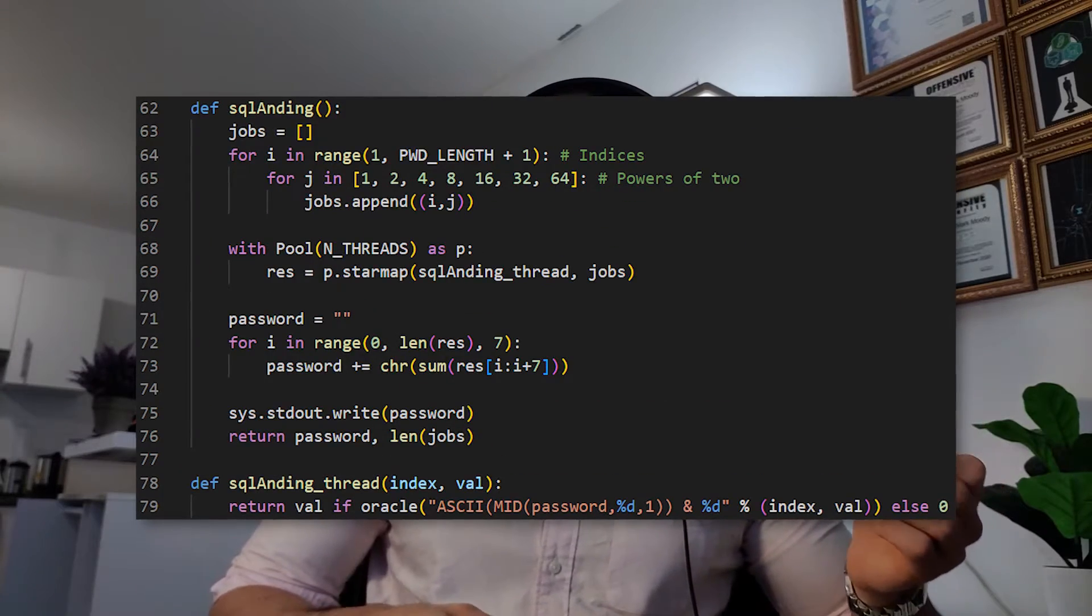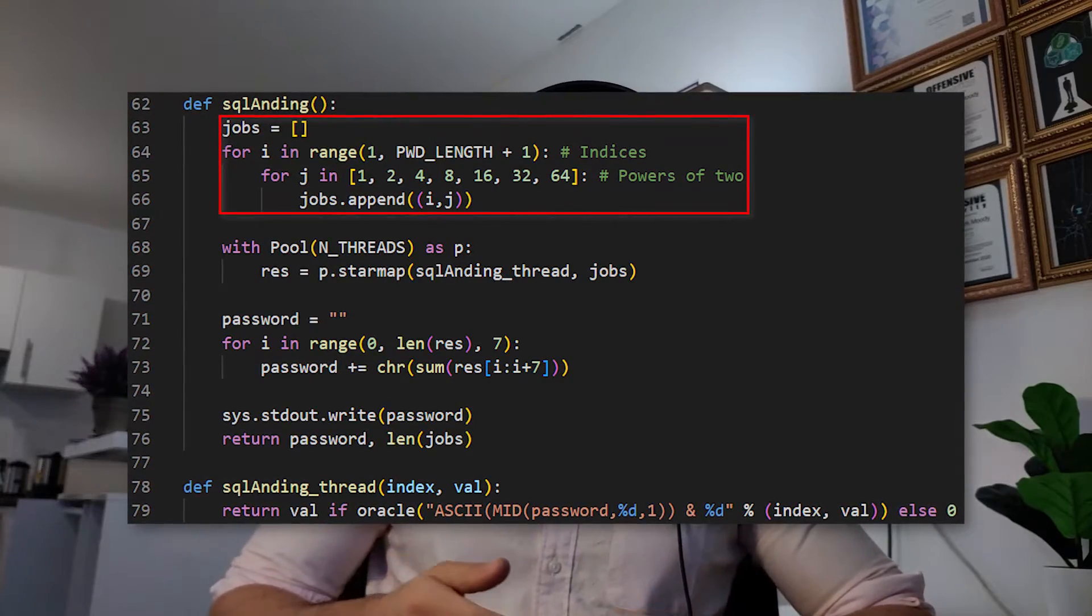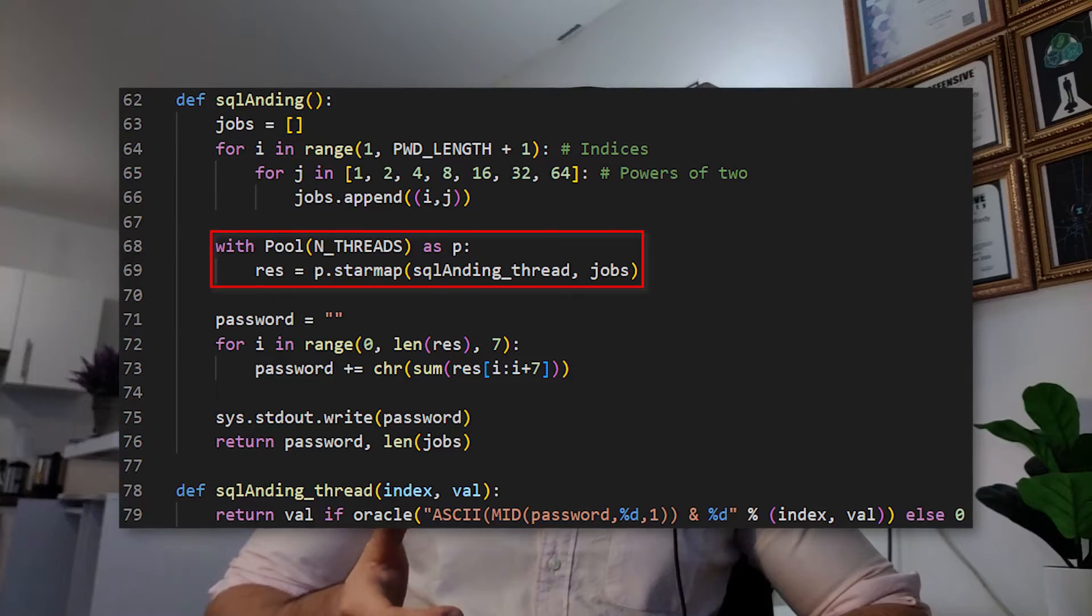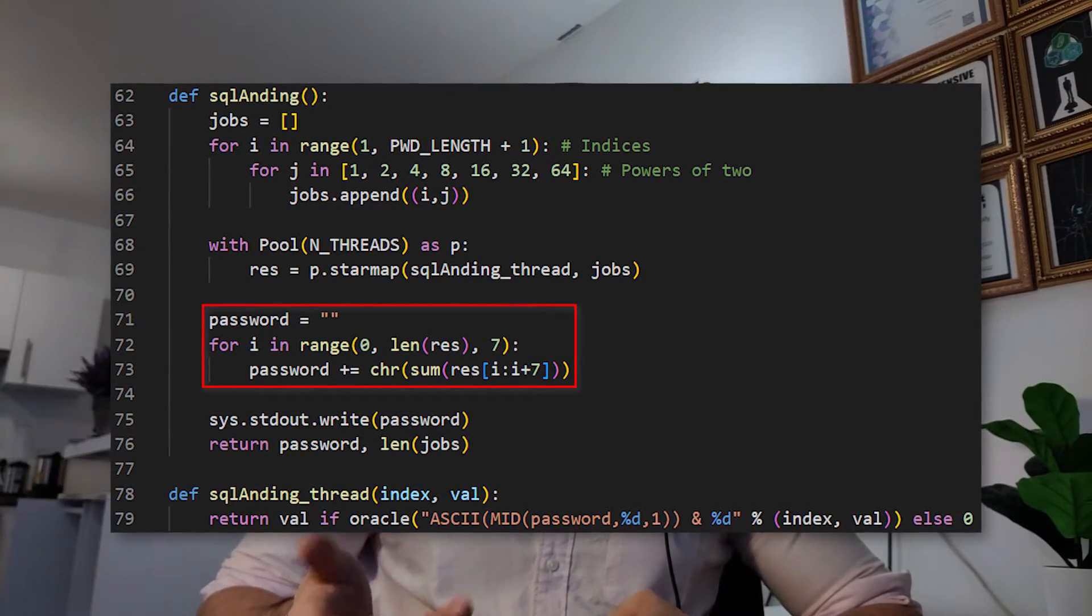This is how I implemented SQL anding in Python. I calculate all the jobs, which are just combinations of indices and power, and then feed this into a thread pool. Once the results of all the queries return, I simply turn the bits into characters.